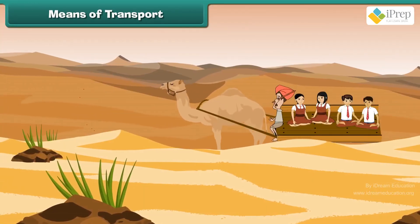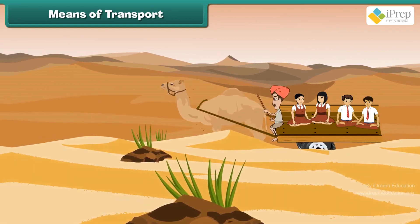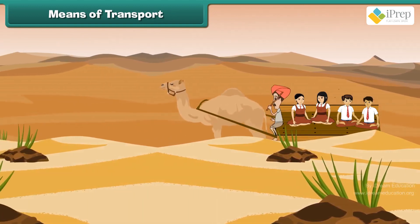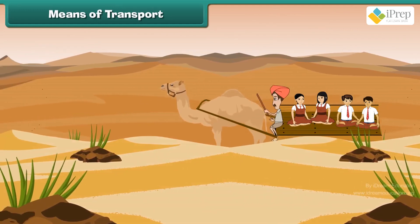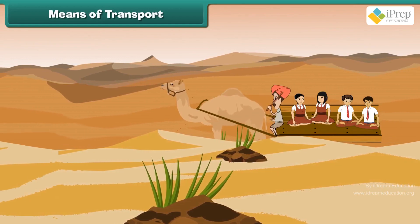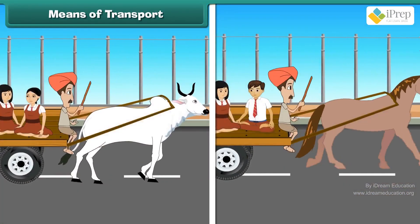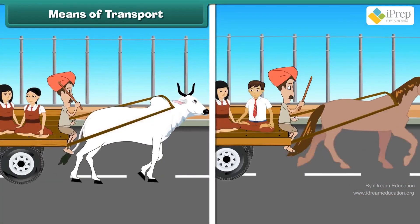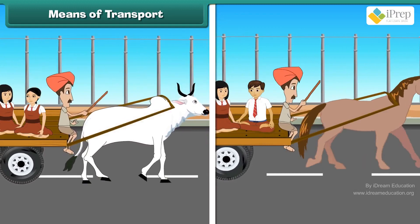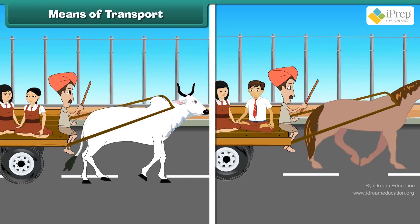In hot deserts like Rajasthan, children use camel carts to reach school. Camels have thin, long legs and can walk on hot sand. In plains such as Uttar Pradesh, children in villages use bullock cart and horse cart or tonga to reach school.